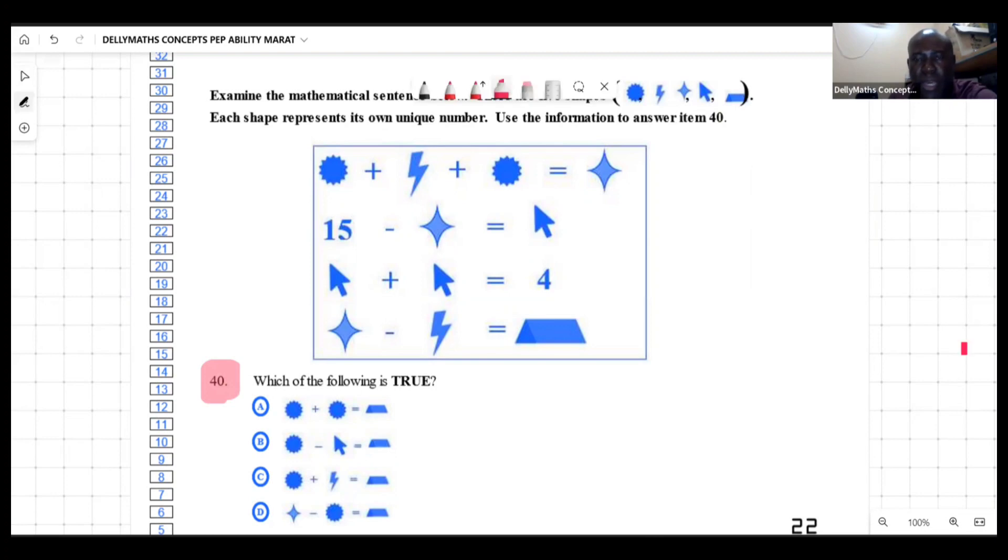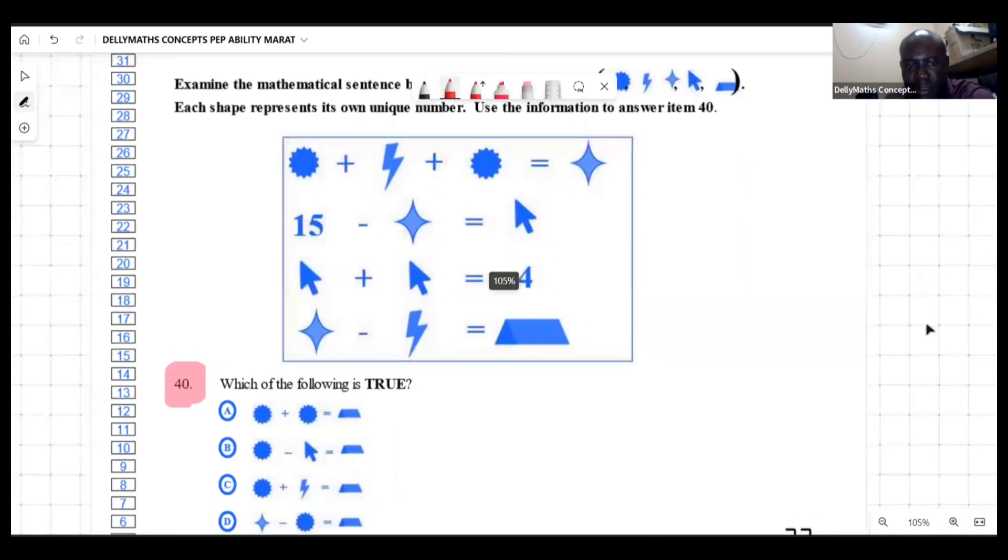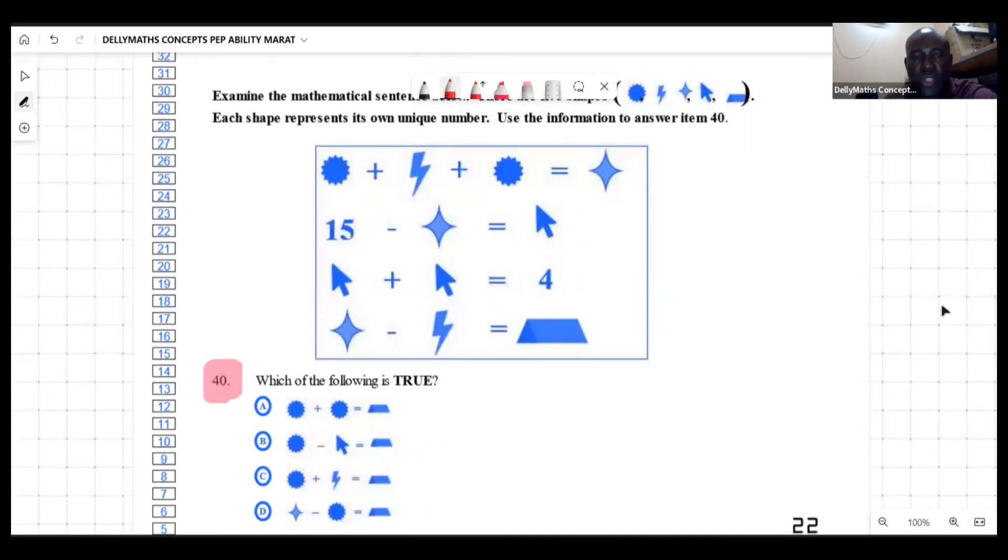We're going to use it to answer item 40. Now we're looking at sun plus lightning bolt plus sun equals star. 15 minus star equals an arrow. Arrow plus arrow, that's gonna give me four. And star minus lightning gives me a prism.